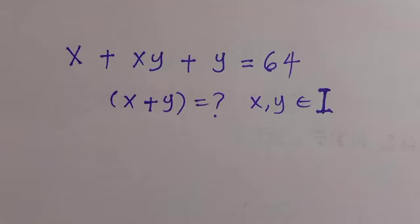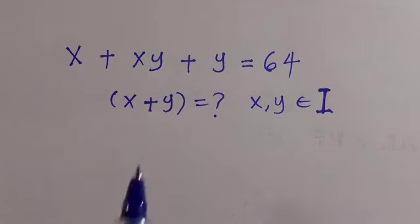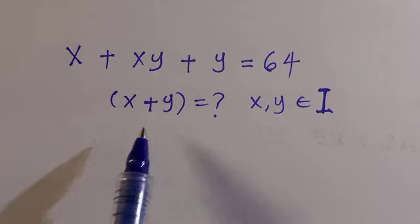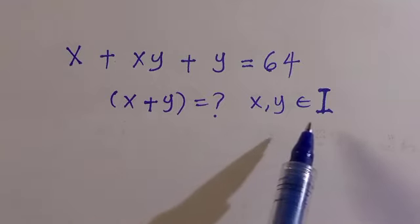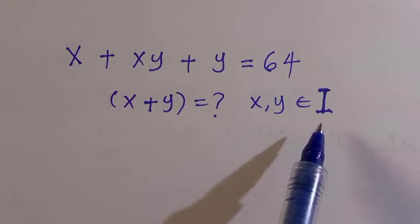Good day viewers and you are welcome. How to solve this Diophantine equation: if we have x plus xy plus y equals 64 and want to find x plus y, given that x and y are both members of the integers.